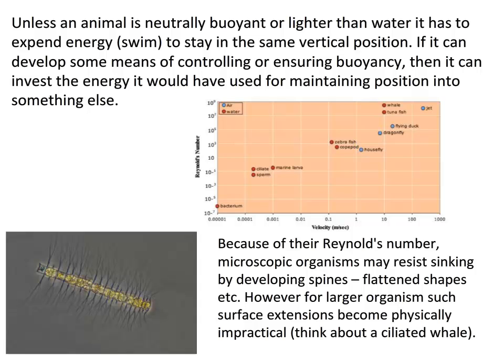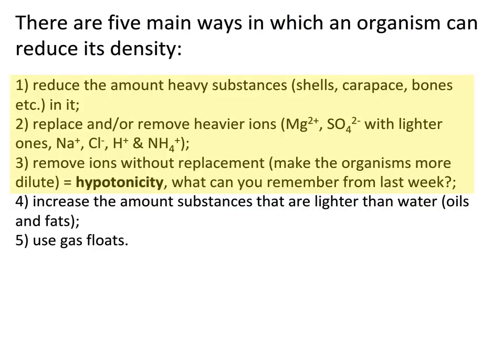For large organisms, surface extensions don't work — if we put our arms out in freshwater, we just sink. There are five main ways an organism can reduce its density or increase buoyancy: reduce the amount of heavy substances; remove heavy ions and replace them with lighter ones; remove ions without replacement (become hypoosmotic); increase lighter-than-water substances like oils and fats; or use gas floats. For example, we use our lungs as gas floats to remain buoyant.